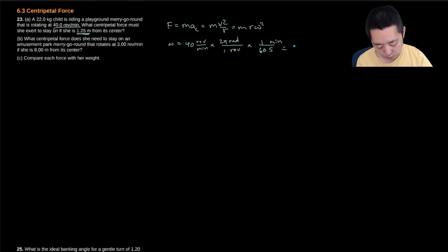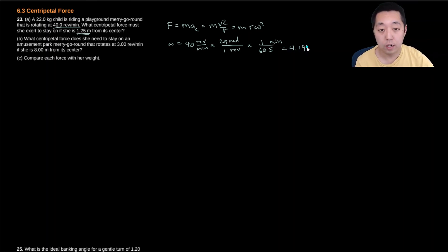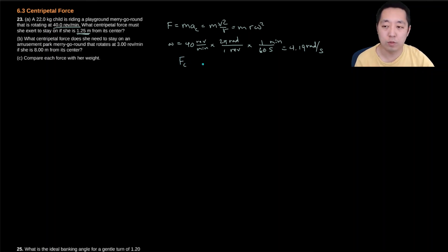So 40 times 2π divided by 60 gives me 4.19 radians per second. Then I plug into the centripetal force formula — we call this centripetal force.